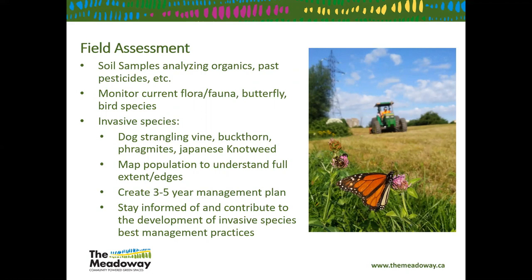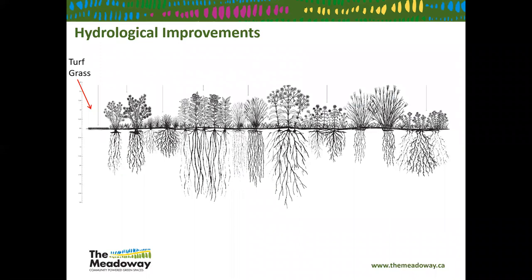One key recommendation is to create a three-to-five year management plan. Without it, you won't be able to think about succession — whether you want your meadow to stay as a meadow or transition to a shrub thicket, and how your structure under the right-of-way affects that. Stay informed and keep an open mind to new techniques on meadow restoration or new best management practices on invasive species like dog-strangling vine — there may be new ideas from other practitioners.